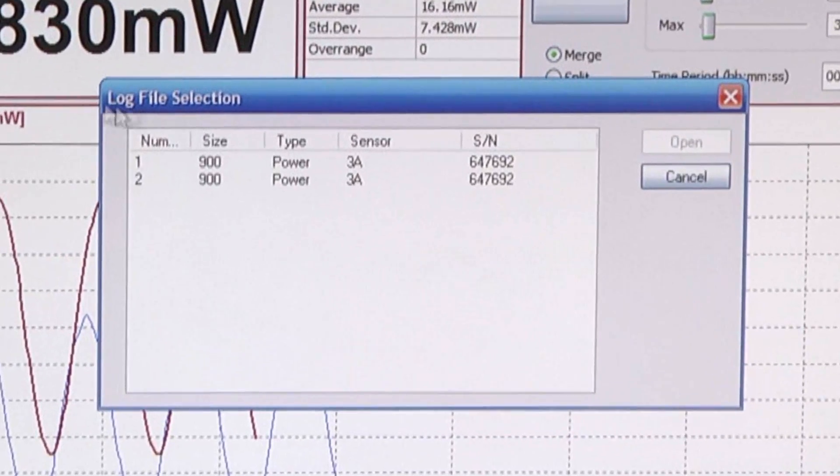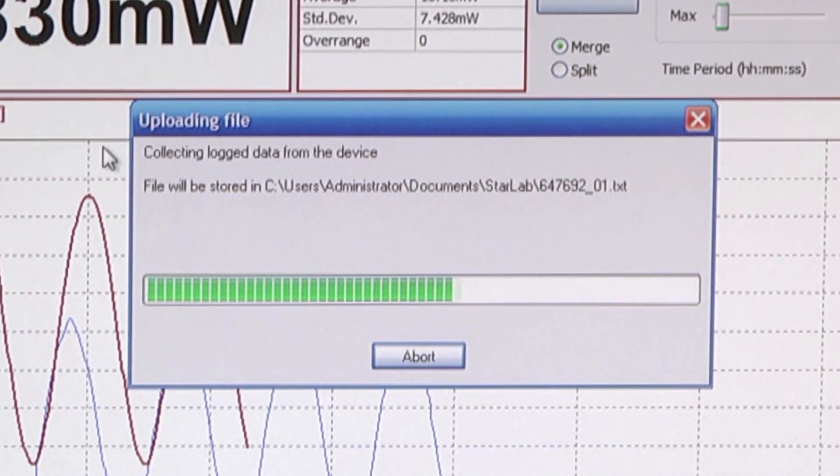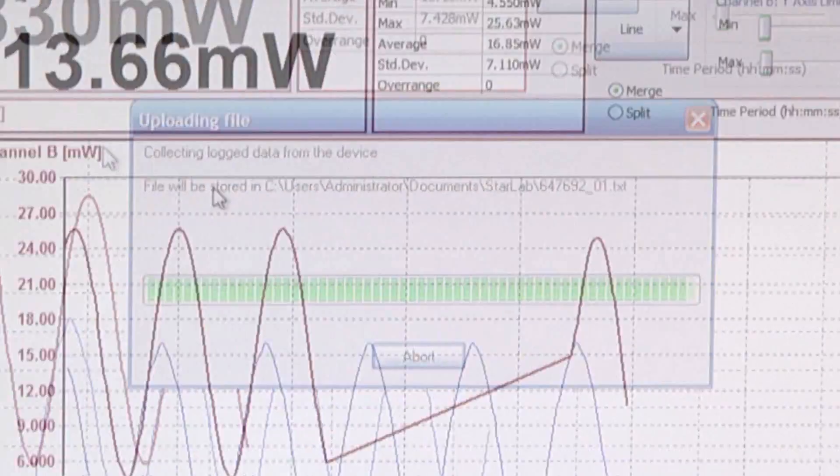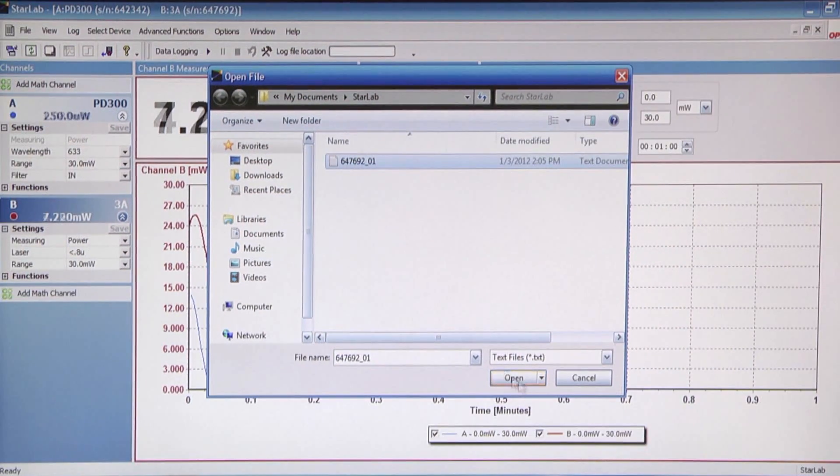We choose one of them and click open. The file downloads. To see the file, click file, open, select the file, and open it.